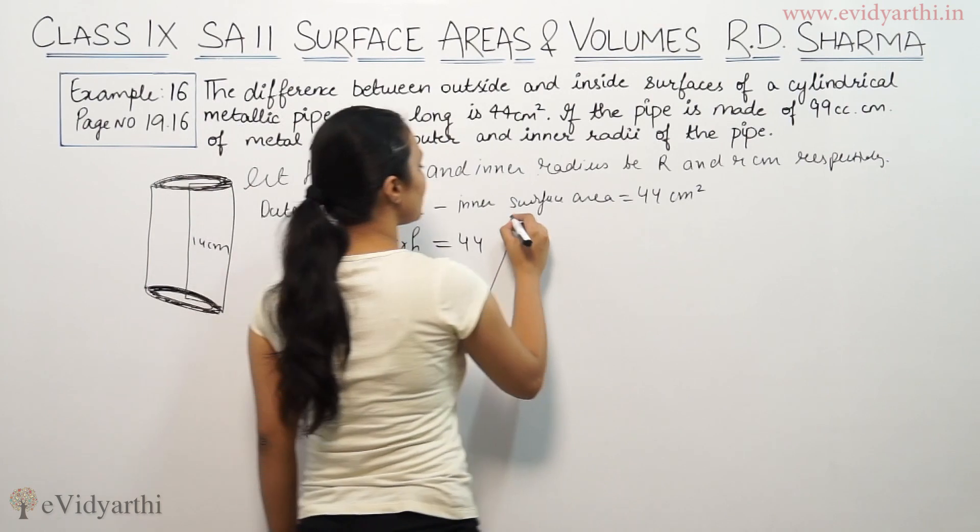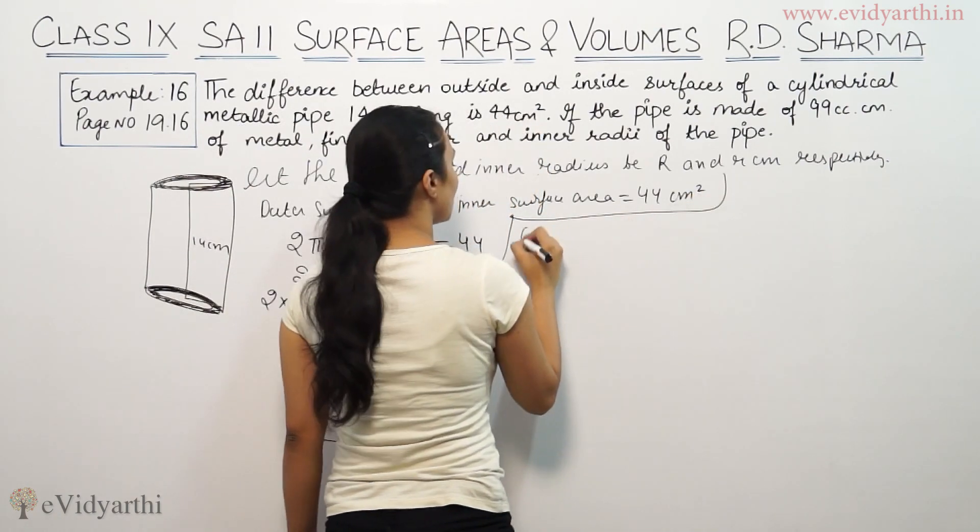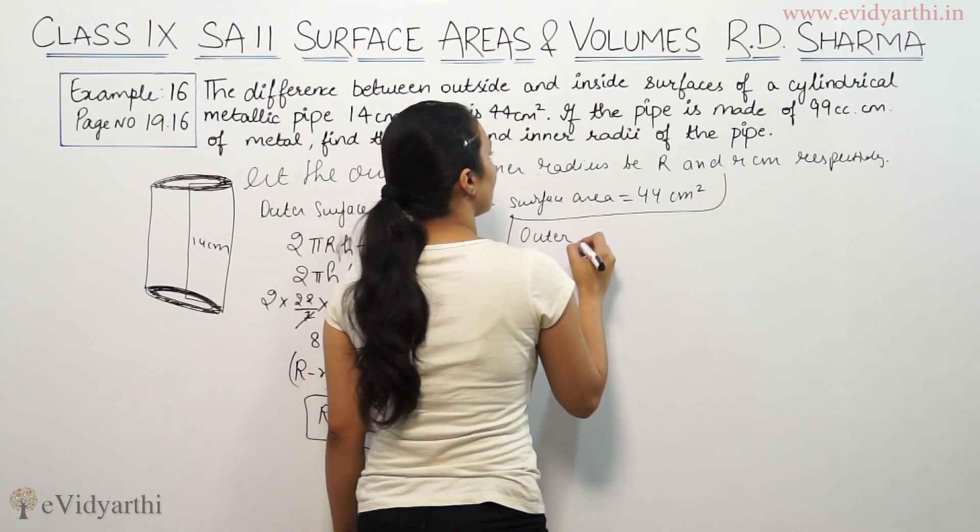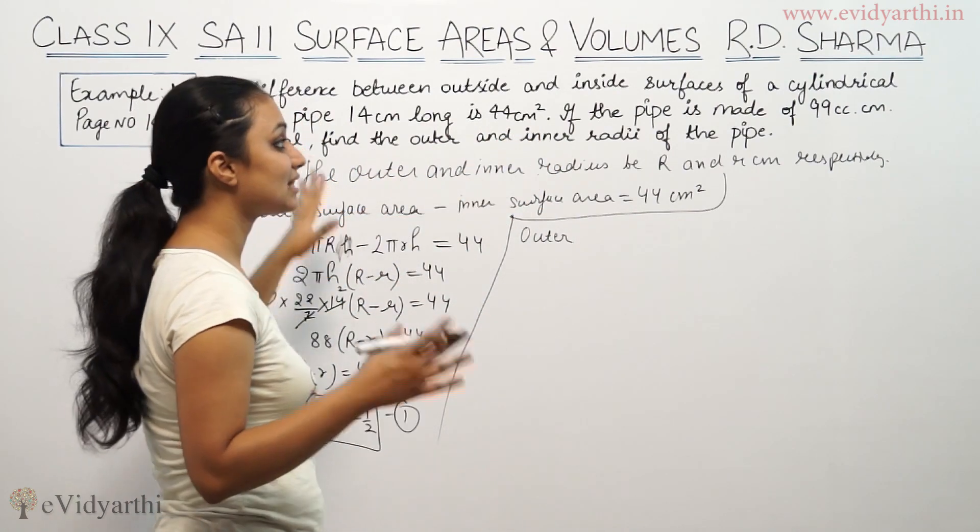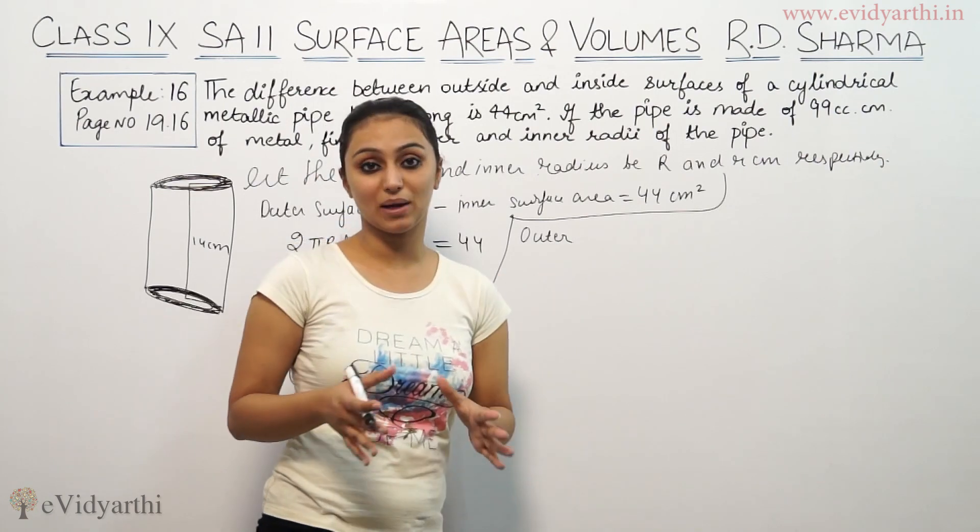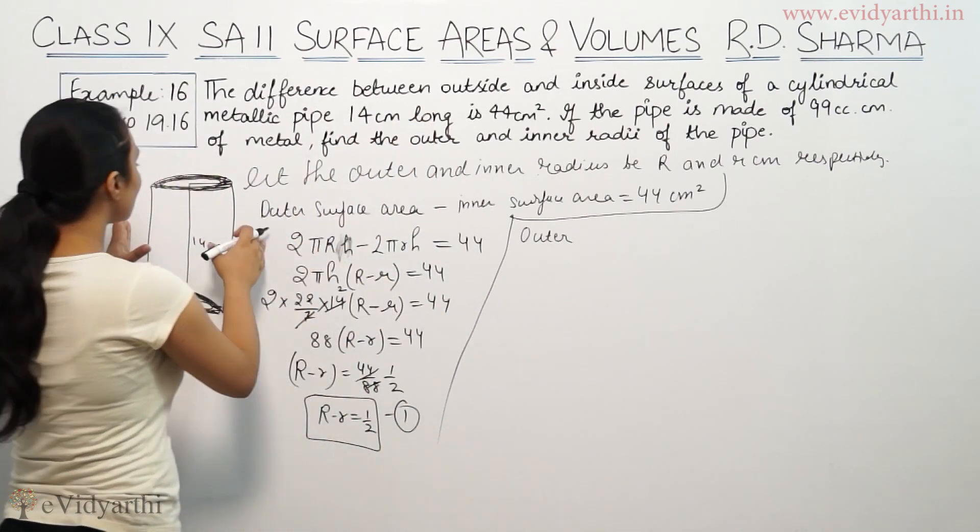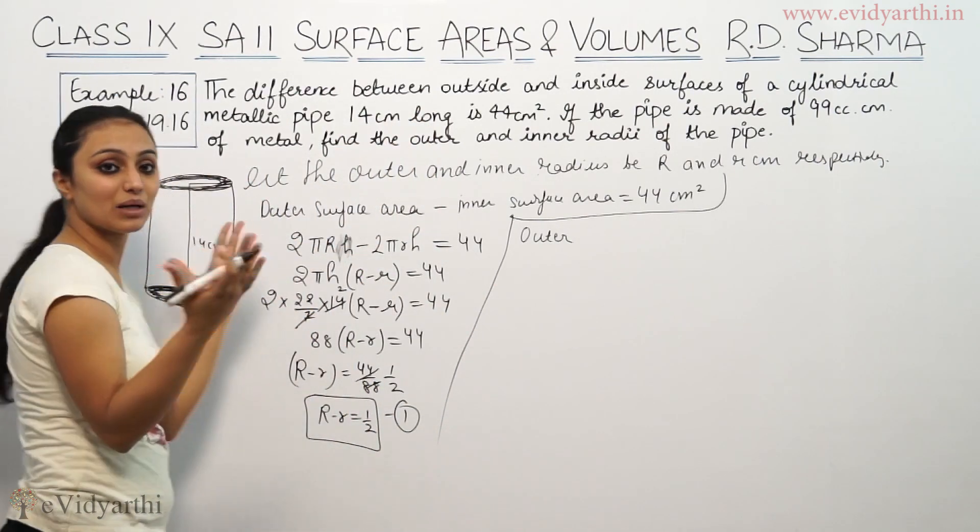Now similarly for volume. In volume, the outer and inner volumes are given as 99 cubic centimeter. This much volume is used for the pipe.